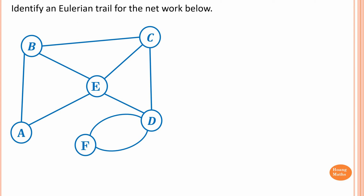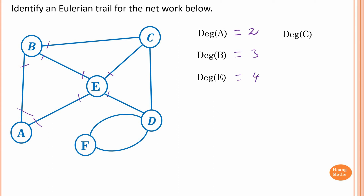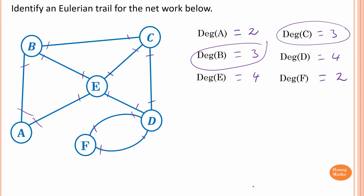To do this, we need to find the degree of each vertex. Vertex A has degree 2, vertex B has degree 3, vertex E has degree 4, vertex C has degree 3, vertex D has degree 4, and vertex F has degree 2. For an Eulerian trail to exist, we must have exactly 2 odd degrees. The degree of B and the degree of C are both 3, which is odd, and the rest are even. Therefore, this network has Eulerian trails.